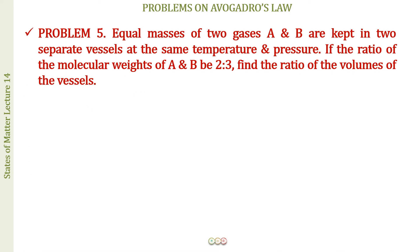The next question: equal masses of two gases A and B are kept in separate vessels at the same temperature and pressure. If the ratio of molecular weights of A and B is 2:3, find the ratio of the volumes of the vessels.